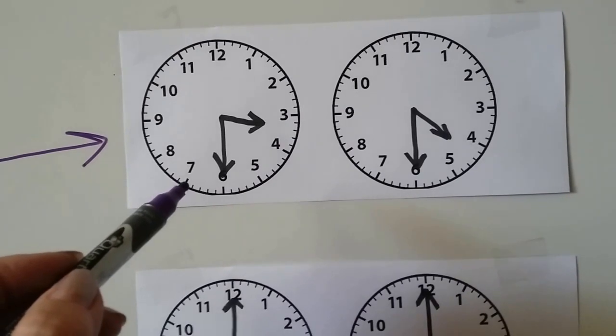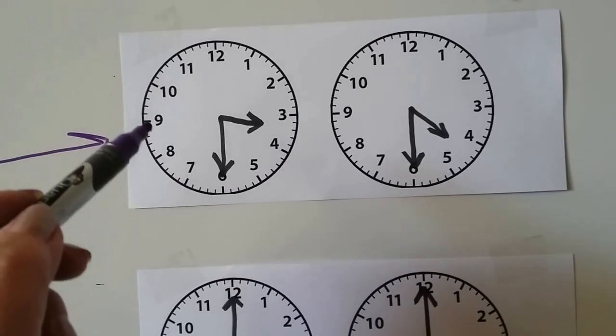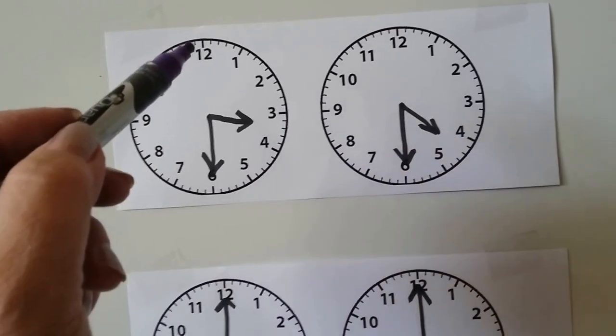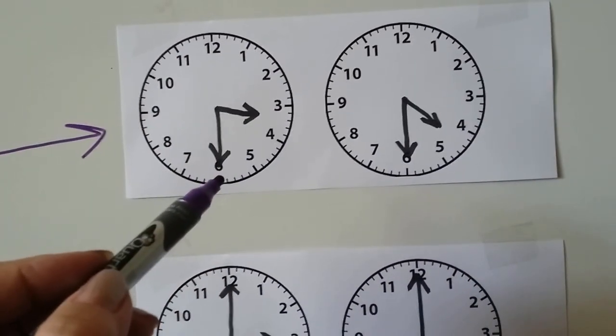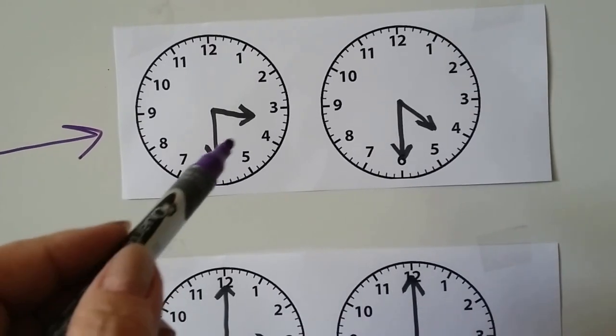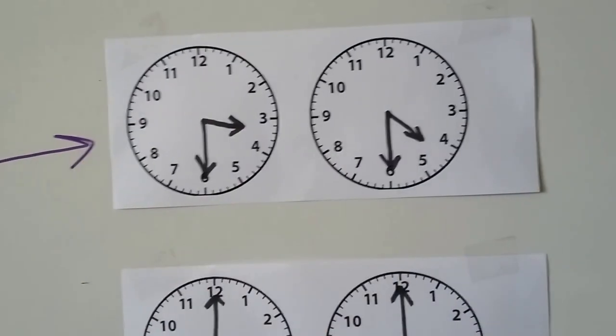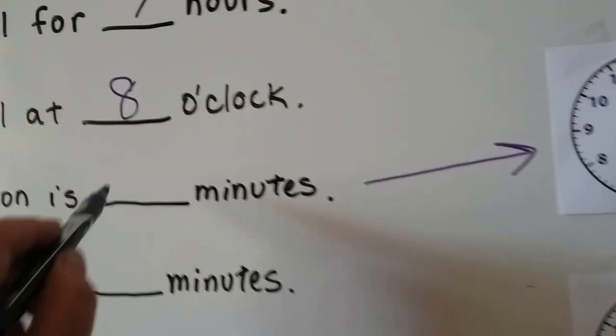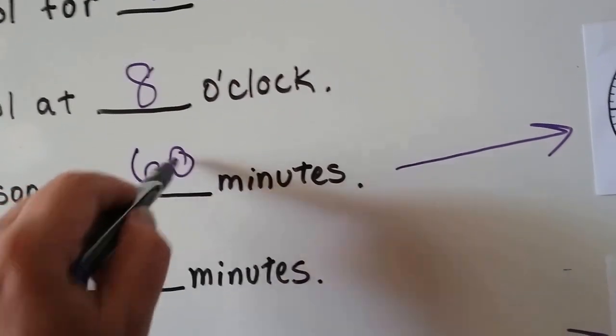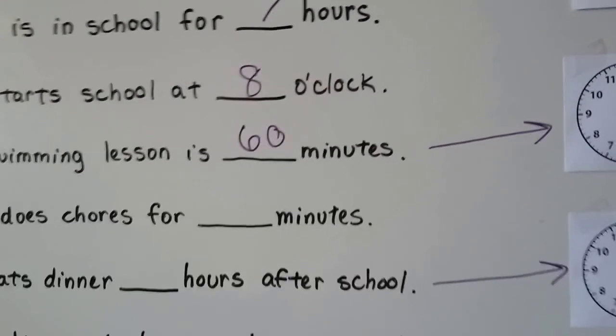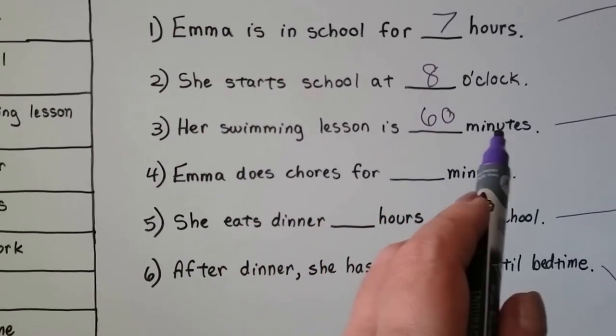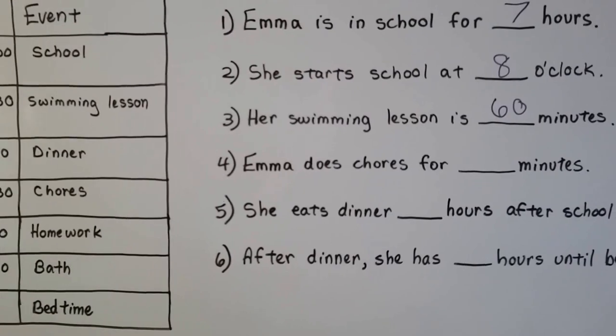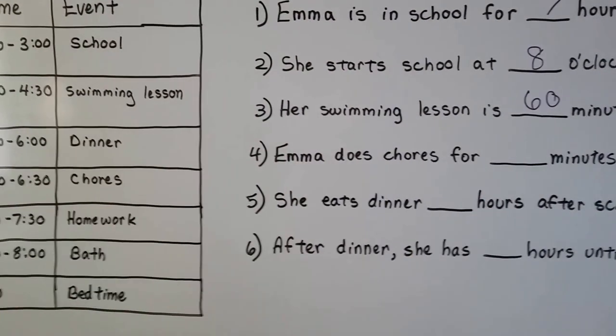So that's 5 minutes, 10, 15, 20, 25, 30, 35, 40, 45, 50, 55, 60. So it's 1 hour from 3:30 to 4:30, and we know that 1 hour is 60 minutes, isn't it? We have to be careful because it didn't say her lesson is blank hours, it said minutes. So even though it was 1 hour, we had to write it as minutes.